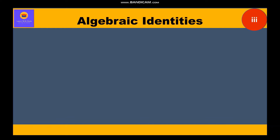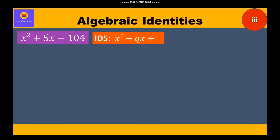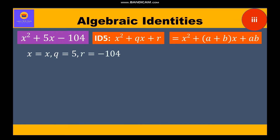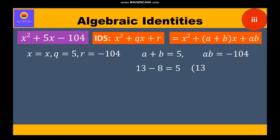Question 3: factorize x² + 5x - 104. The third term is negative and not a perfect square, so it is clearly identity 5 with standard form x² + qx + r. Here q = 5 and r = -104, meaning a + b = 5 and ab = -104. We find 13 + (-8) = 5 and 13 × (-8) = -104.